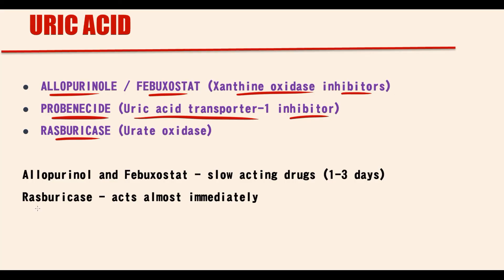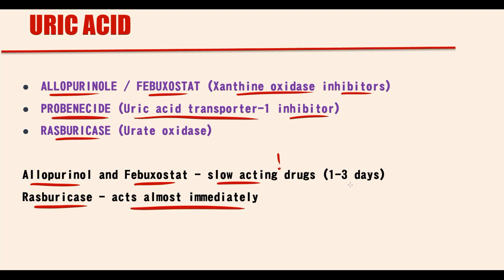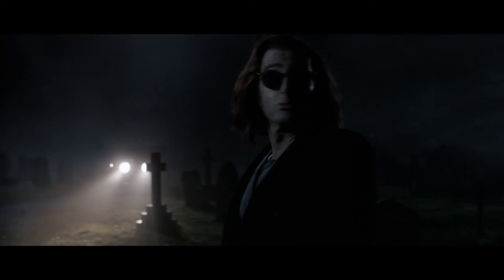An additional feature to note is that rasburicase acts almost immediately, whereas allopurinol and febuxostat are slow-acting drugs, because it takes time to inhibit xanthine oxidase. For allopurinol and febuxostat, it takes 1–3 days after intake to make a significant difference.